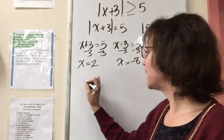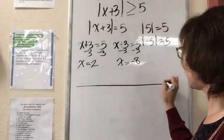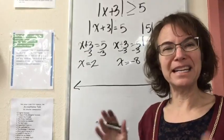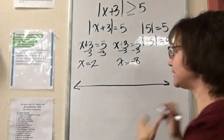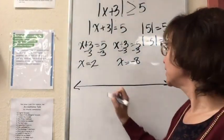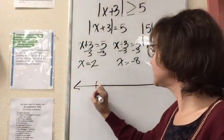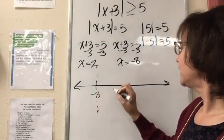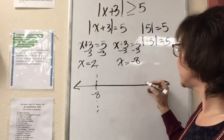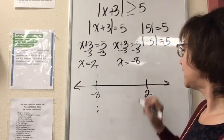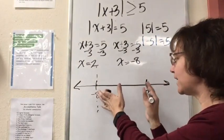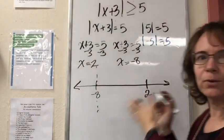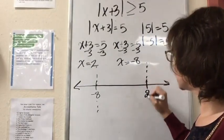So I have these two boundary points, and when I look at them on a number line, it's going to divide my number line into three different intervals. I have negative 8, to the left of negative 8, then 2, in between negative 8 and 2, and to the right of 2.